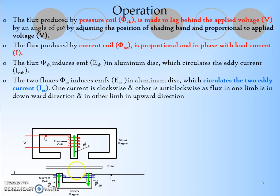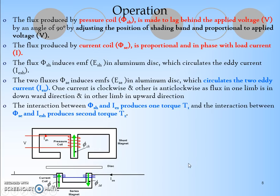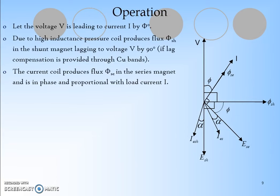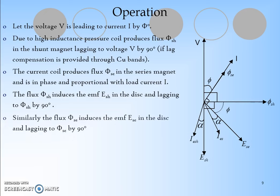One flux direction is between the series coil - one flux is going upward and the second flux is going downward in the series magnet. The interaction between φ_SH and I_ES produces the torque T1, and the interaction between φ_SE and I_ESH produces the torque T2. This way the resultant torque will give the rotation in the disc.